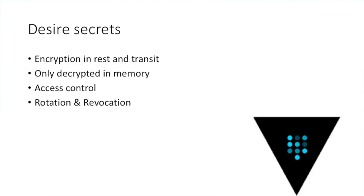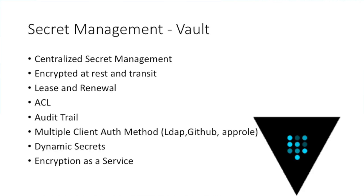This is where secret management comes into place — a product like Vault. There are other products too, like Azure Key Vault and Amazon KMS. Everybody has some kind of vault behind it, but Vault is an open source one that allows you to use it easily. It allows you to have centralized secret management. Remember how secrets were littered everywhere in source code? Vault takes all of that stuff and centralizes it in one place.